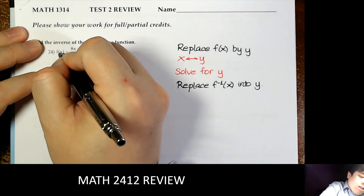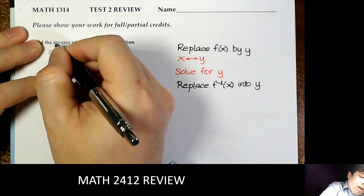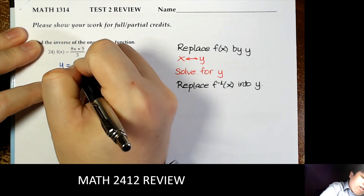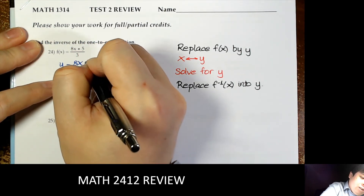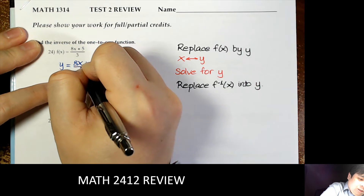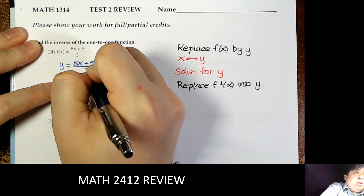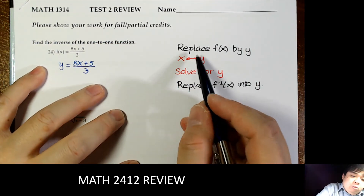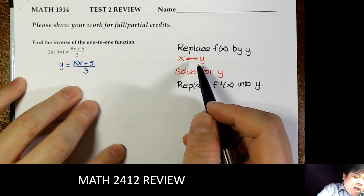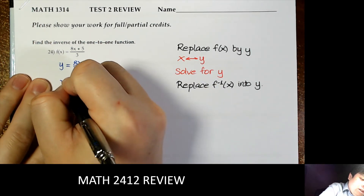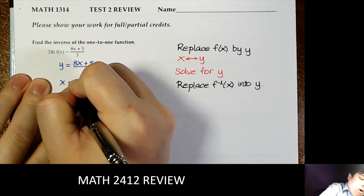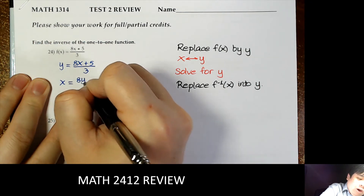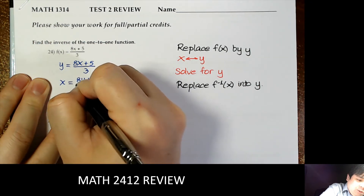So first we take f(x) and write that as y. That's the first step. Then we replace x and y — x becomes y and y becomes x.